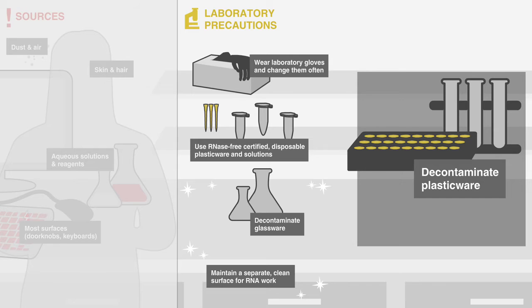Decontaminate polycarbonate or polystyrene materials, such as electrophoresis tanks, by soaking in 3% hydrogen peroxide for 10 minutes. Remove peroxide by extensively rinsing with RNase-free water prior to use.